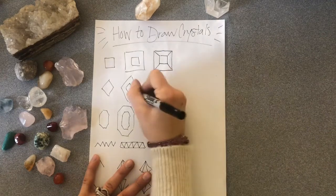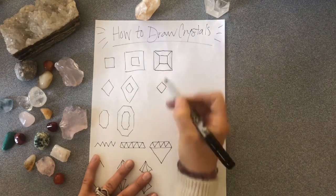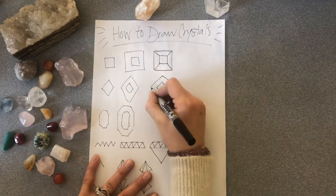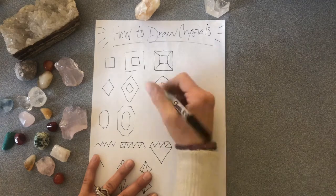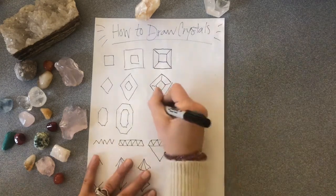Next we're going to draw a diamond shape, and draw another diamond around that. You're going to connect the corners, and you've got your second crystal.